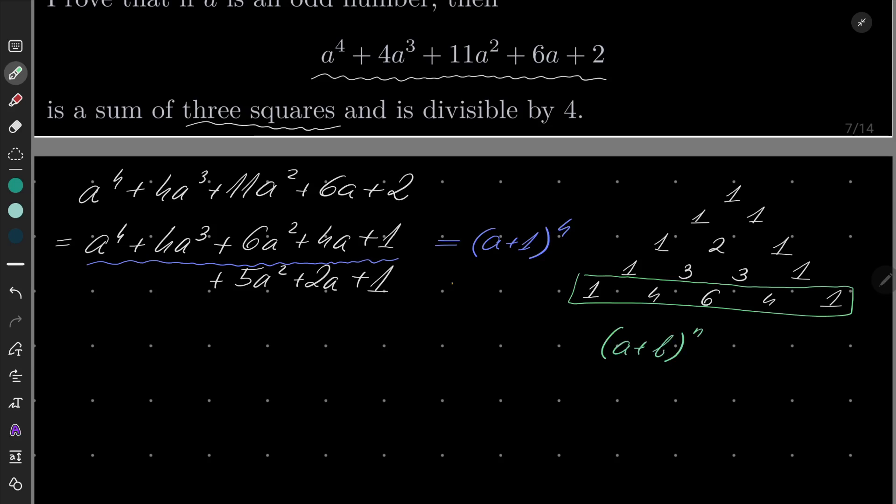So, for example, if you expand (a+b)^4, it's just a^4 + 4a^3b + 6a^2b^2 + 4ab^3 + b^4. It works for every n. Works like magic, I'd say.